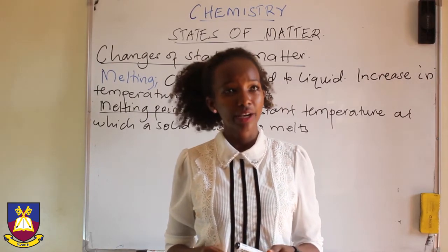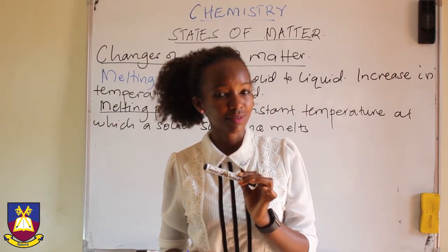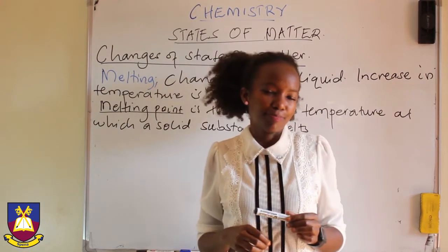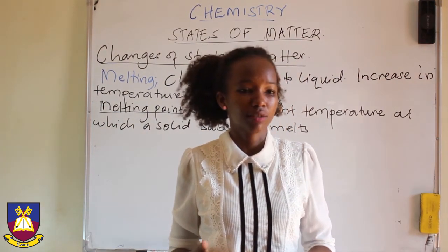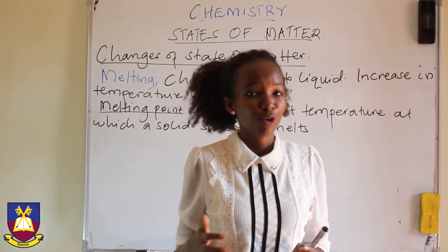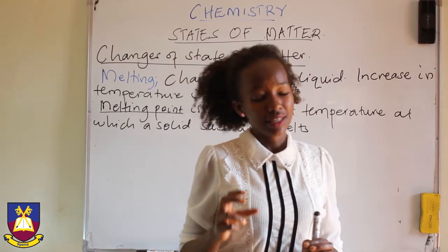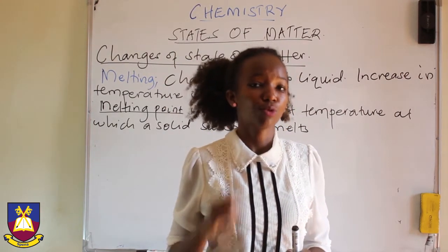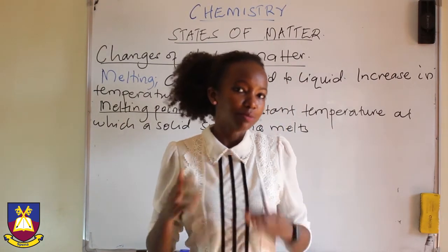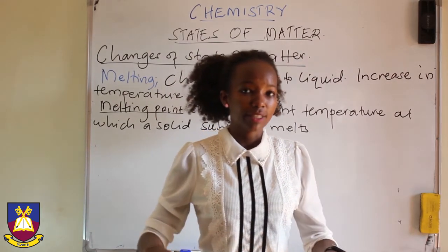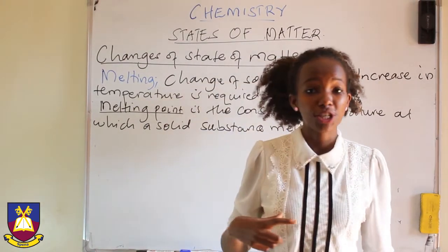Melting point. Water melts at a temperature of zero degrees Celsius. So it means if I have iced water and I bring it out to the atmosphere or I start warming it on a pan, there is a time before it really melts. But once it reaches zero degrees, it starts to turn into water. Whatever part of the ice that reaches zero degrees, it melts until all of it has melted. And so that point is what I refer to as melting point.